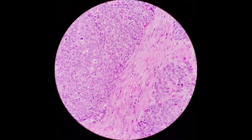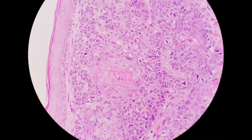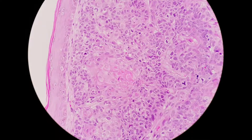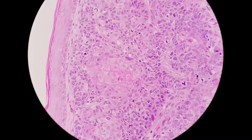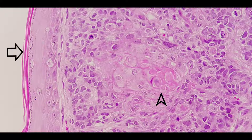I have highlighted the area of the malignant cells and the stroma for easier understanding. To diagnose squamous cell carcinoma, the most important criterion is the production of keratin. Here, we can see that there are a few cells producing keratin.